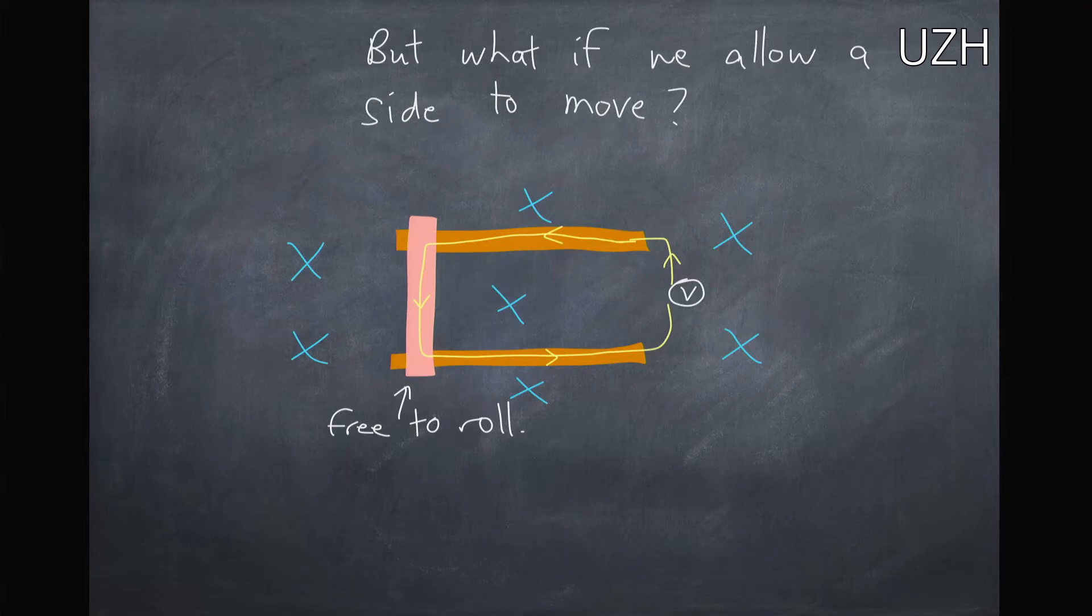So is there some way we can make a piece of metal move? Well, what if we have a current loop that's running in through a system like this, where this piece here can roll across these two conductors. So now,